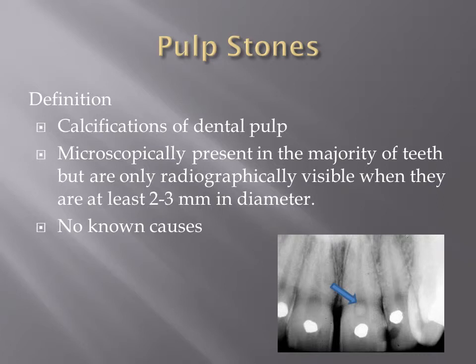Pulp stones are calcifications of the dental pulp, microscopically present in the majority of teeth, but are only radiographically visible when they are at least 2-3 mm in diameter. There are no known causes.